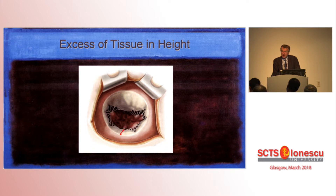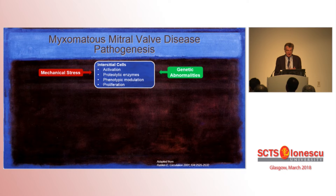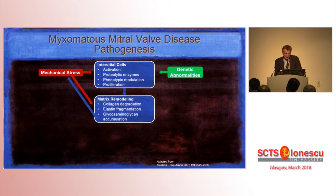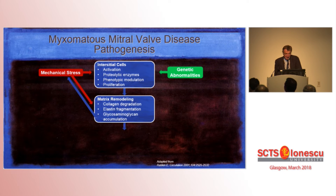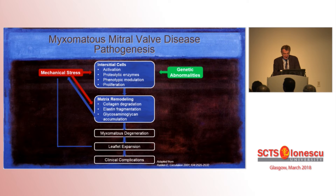Excess of tissue is a very complex mechanism involving mechanical stress and eventually some genetic abnormalities, which combine to generate activation of interstitial cells with complicated biochemical regulations. This leads to remodeling of the matrix, which increases mechanical stress — a vicious circle. This leads to mucoid degeneration, which gives leaflet expansion, excess of tissue, and eventually clinical complications.